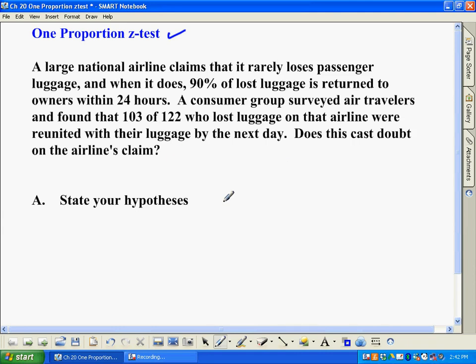Basically what we have is a large national airline that claims 90% of lost luggage is returned to owners within 24 hours. So this consumer group goes out and investigates. They find that 103 out of 122 passengers get their luggage back by the next day, and by the way that works out to be about 84.4%. So the question is, does this cast doubt on the airline's claim? Obviously it's lower than 90%, but is it statistically significantly less than 90%? Here's how we do this.